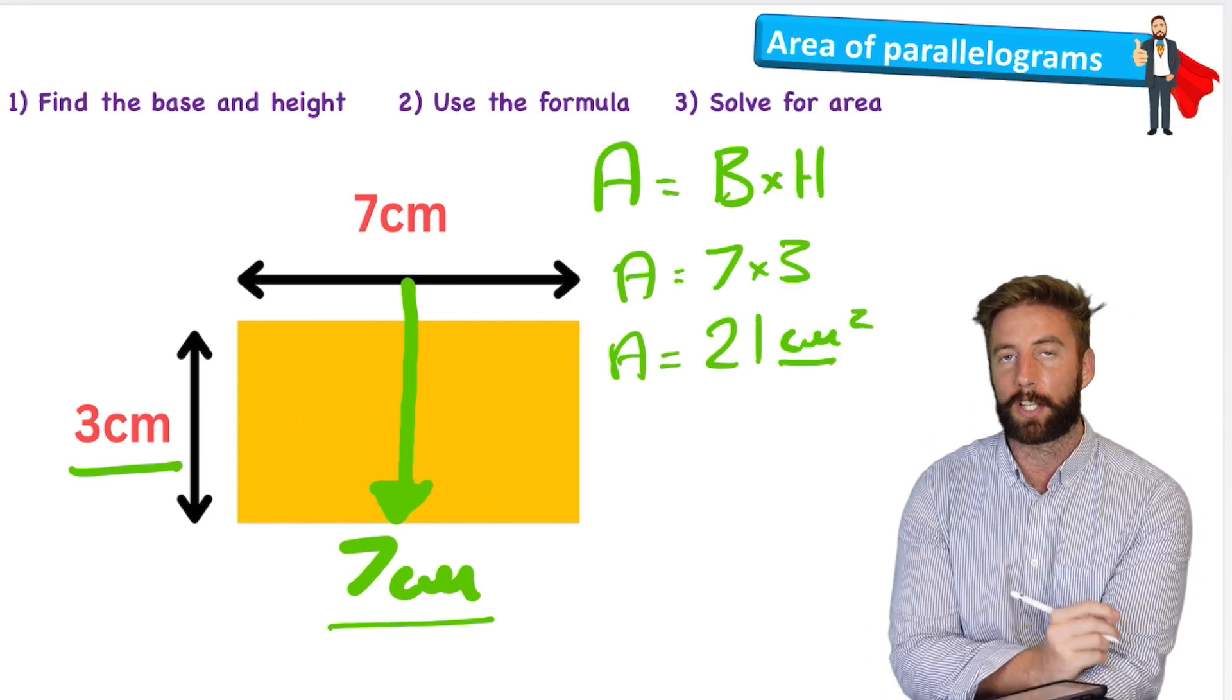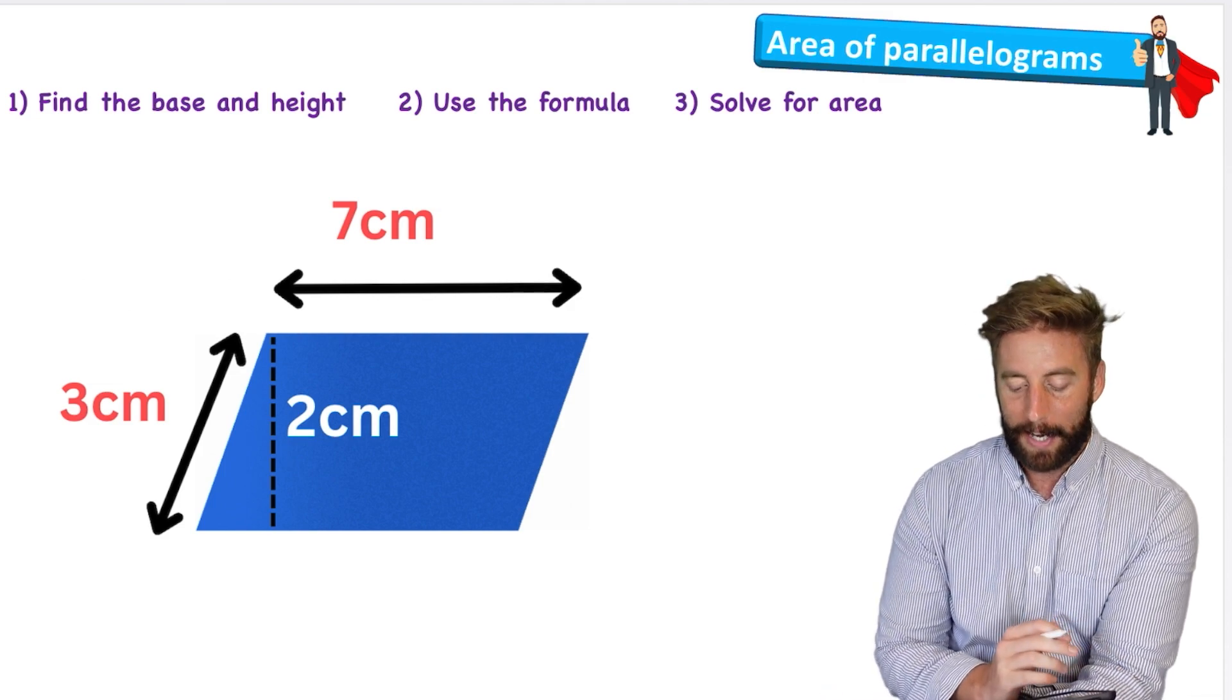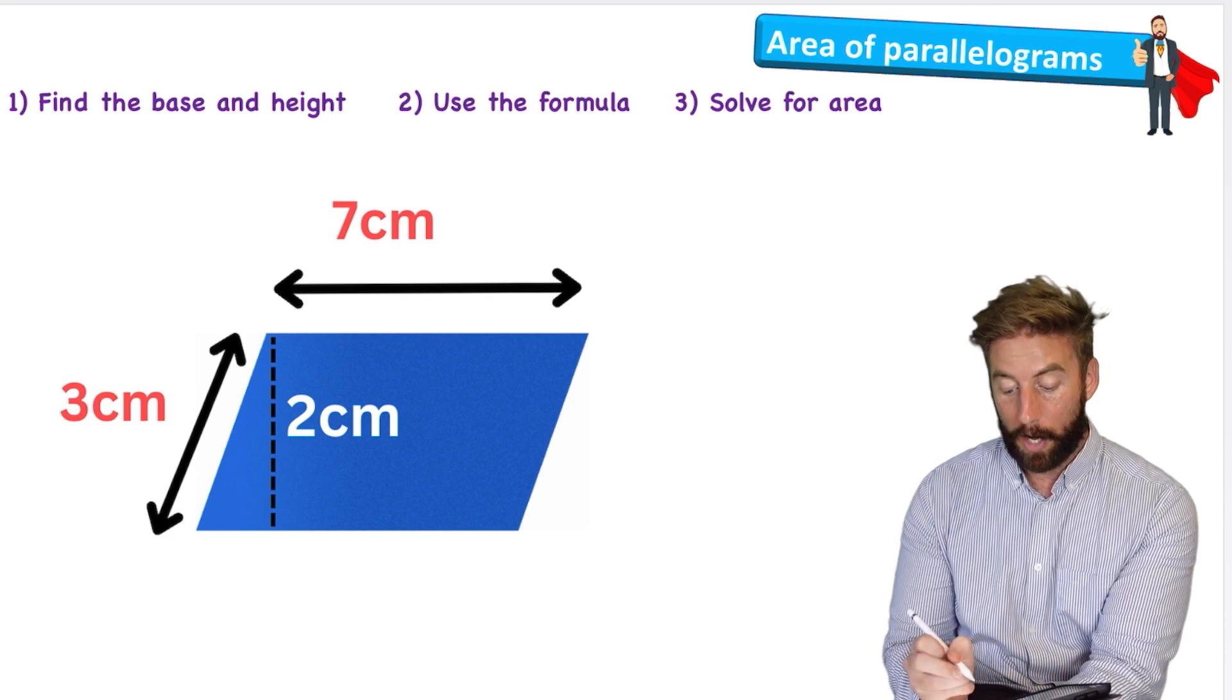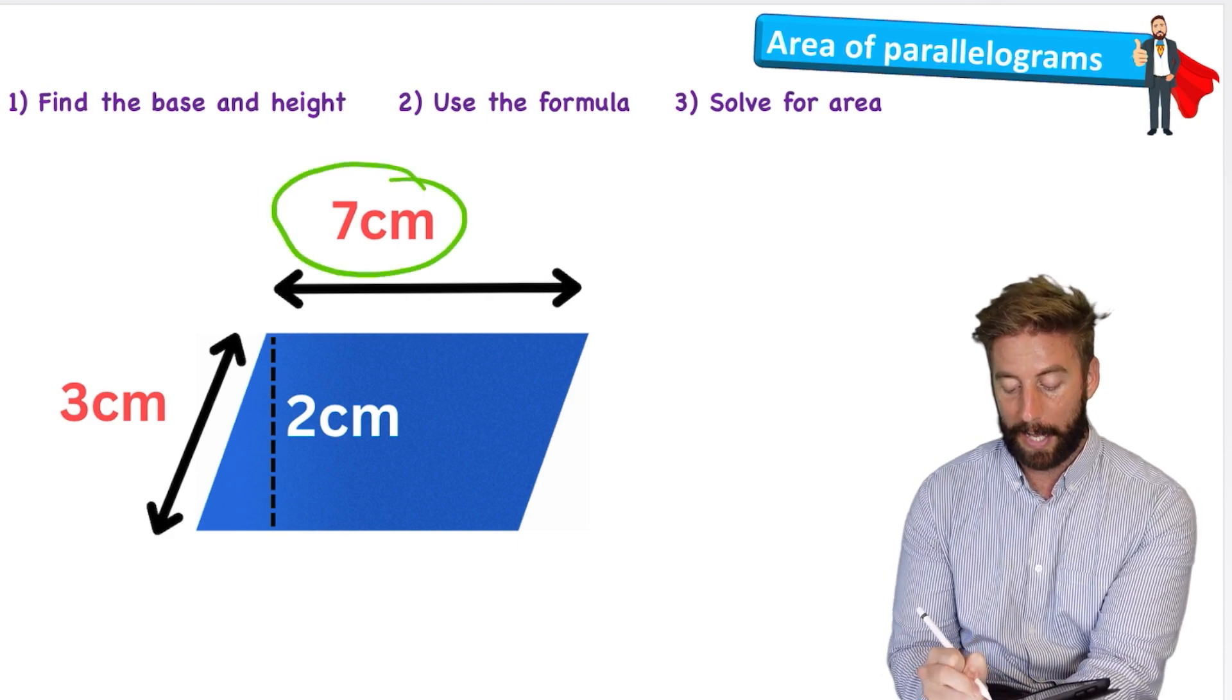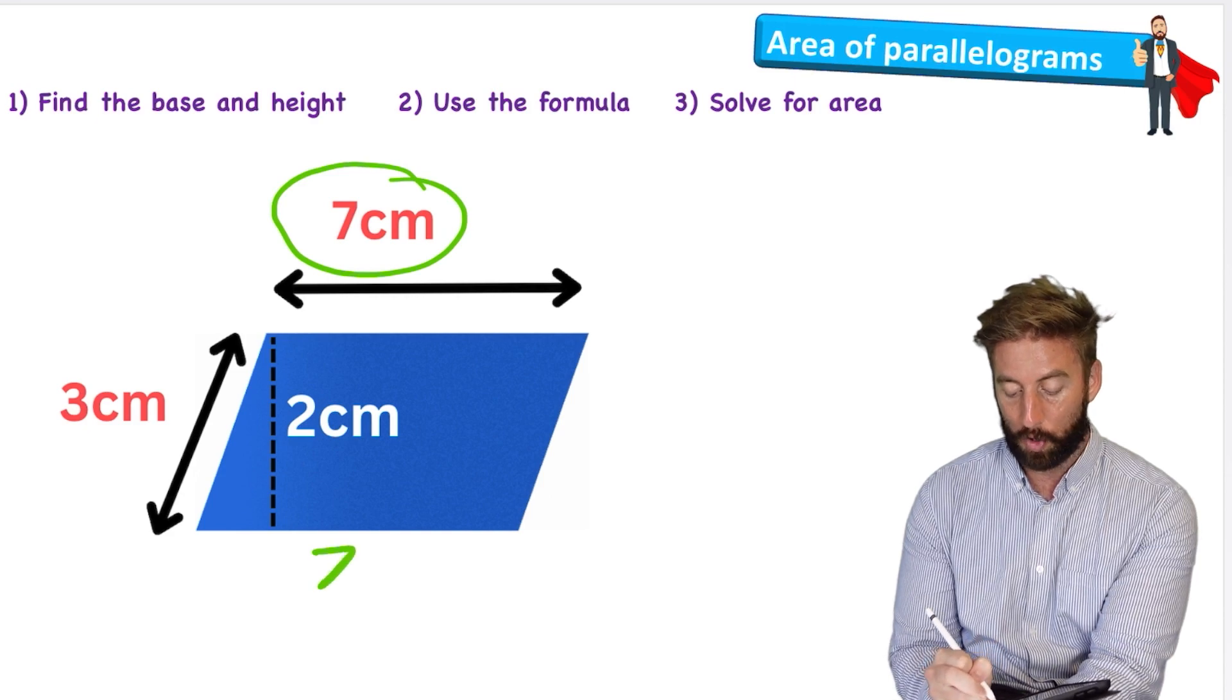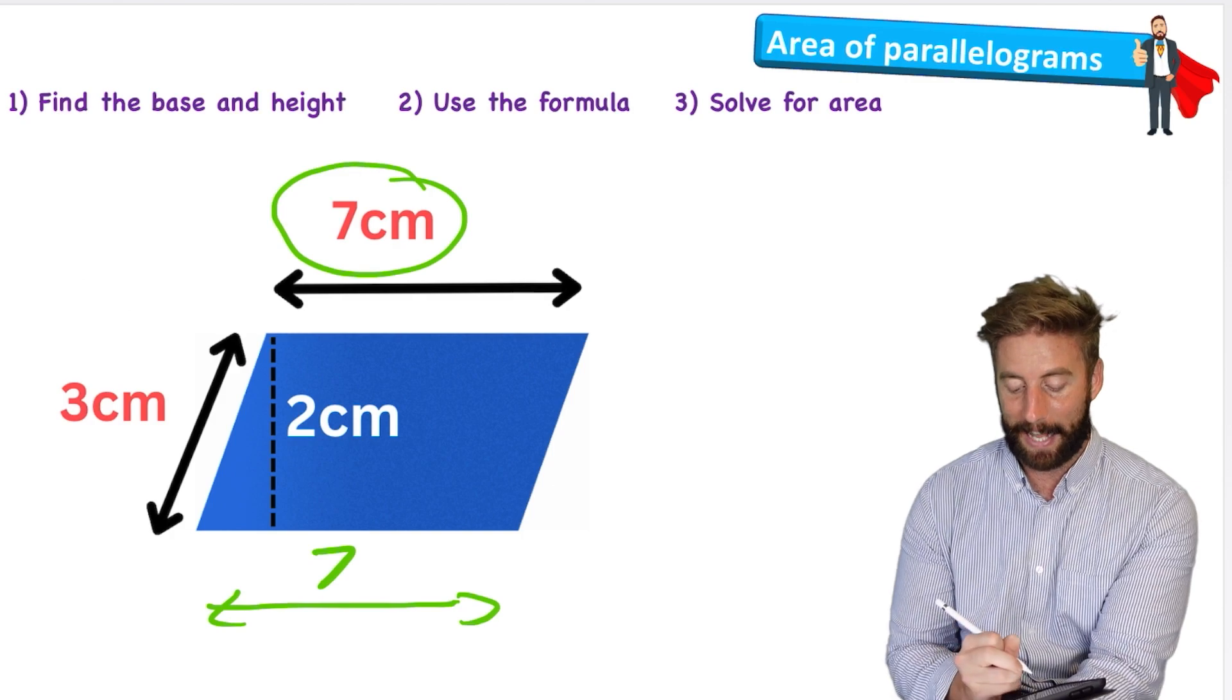So therefore my answer is going to be 21 centimeter squared, because each of the centimeters is one centimeter by one centimeter. Okay, but let's have a look at question two, which is a bit harder. Now we can see here that we have again the base, and what I know is that if this length here is seven centimeters, then again this down here must also be seven centimeters, so my base is seven.